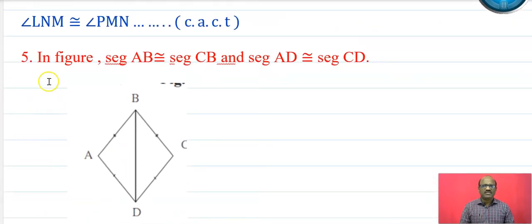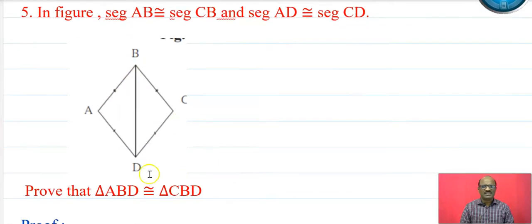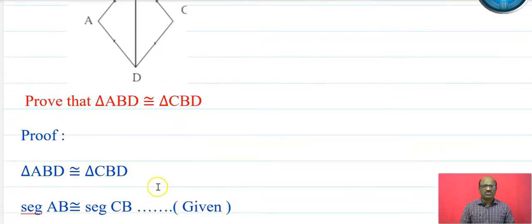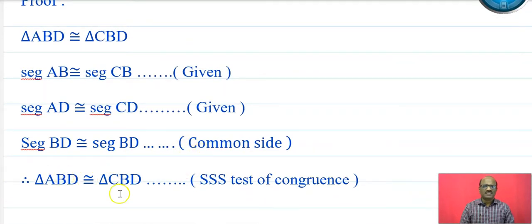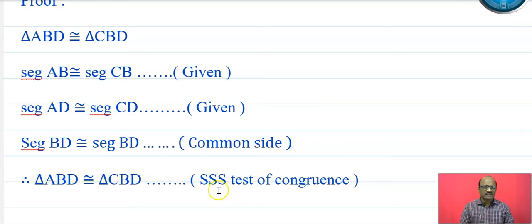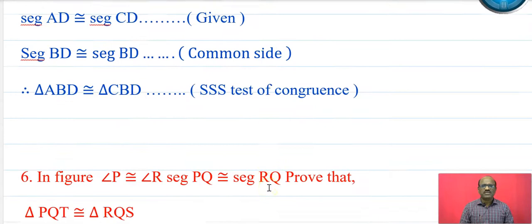In the next figure, segment AB is congruent to segment CB, segment AD is congruent to segment CD, which is given. BD is a common side. Therefore triangle ABD is congruent to triangle CBD by the SSS test, since segment AB is congruent to segment CB, segment AD is congruent to segment CD, and segment BD is congruent to segment BD which is common.